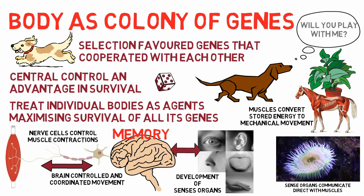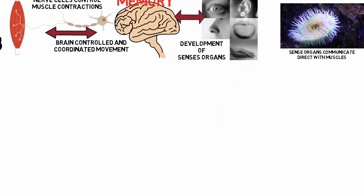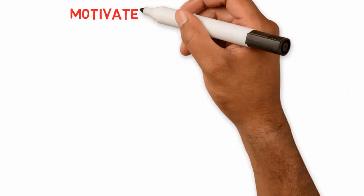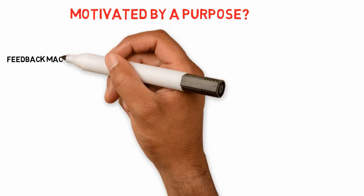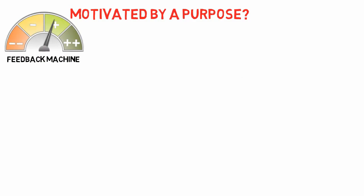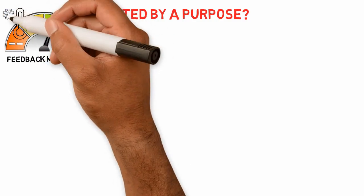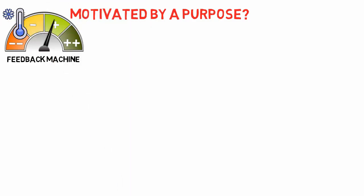Dawkins mentions that the most striking property of survival machines is that they behave as if motivated by purpose — in other words, as purpose machines — which raises the question of whether they are actually conscious. Dawkins points to the analogy of a negative feedback machine, which has a measuring device that measures the discrepancy between the current state and the desired state, working harder to reduce that discrepancy, like a modern guided missile.